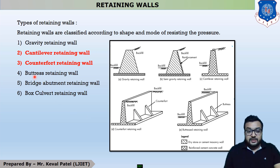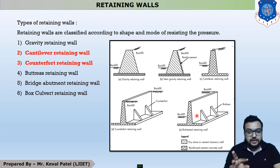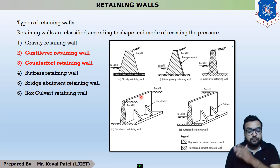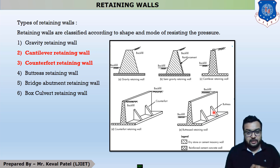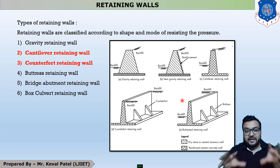The fourth type is buttress retaining wall. The difference between counterfault retaining wall and buttress retaining wall: in counterfault retaining wall, the backfill is provided on the portion of the counterfault. In buttress retaining wall, the backfill is provided on the opposite side of the buttress. This is the major difference between counterfault and buttress retaining walls.